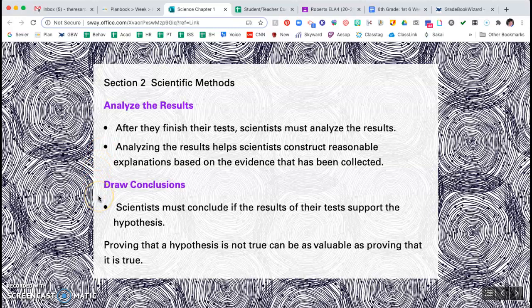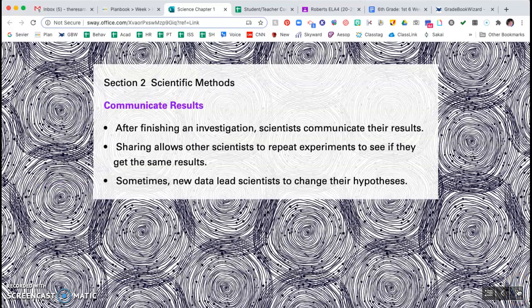Then you're going to draw conclusions. So scientists can conclude if the results of their experiment support their hypothesis. And again, proving that a hypothesis is not true can be as valuable as proving that it is true. And this kind of goes against our nature. Because if we make a hypothesis, an educated guess, we kind of want to be right about it. So we want our results to end up proving us right. But that's not what the scientific method is all about. A hypothesis that you prove untrue is still giving information to the scientific field. So that knowledge is still there.